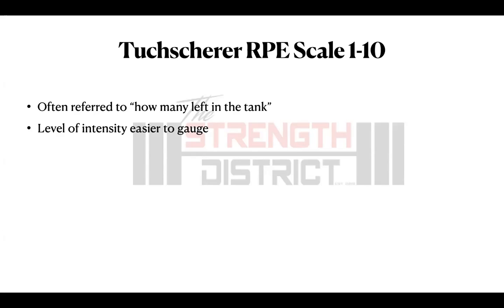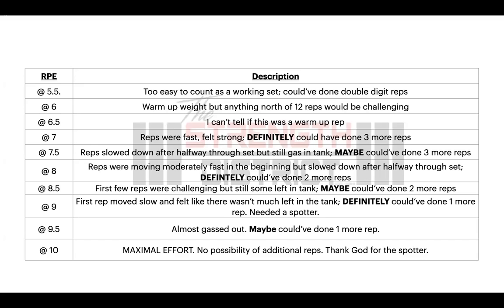This modified scale is a little easier to gauge because you're probably not doing five different exercises as a superset — it's used for hypertrophy or strength training. However, gauging it can be more convoluted since we're aiming for a more precise RPE. Take your time reading through the scale. For example, an RPE of 7.5 means your reps slowed down after halfway through the set but you still had some gas left — maybe you could have done three more reps.